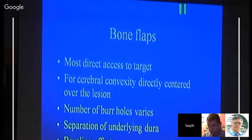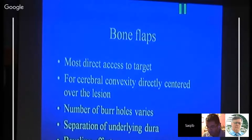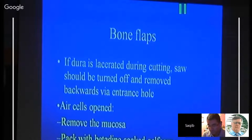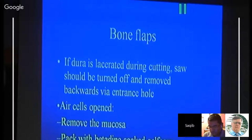Bone flaps give more direct access to the target. For craniotomies, the flap should be directly centered over the lesion. The number of burr holes depends on the patient's age, dura adherence, and operative location. Separation of the underlying dura differs between children and older patients. Bevel the edges to keep the bone from sinking. If the dura is lacerated during cutting, retrieve the saw carefully. If air cells or sinuses are opened, remove the mucosa, pack with Gelfoam, and cover with vascularized tissue.